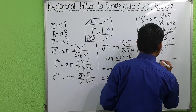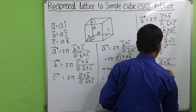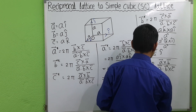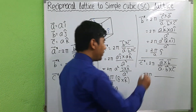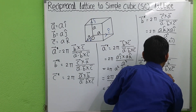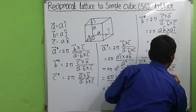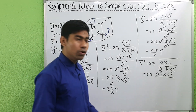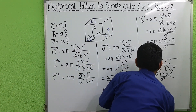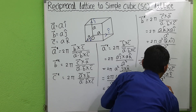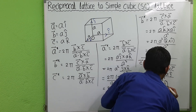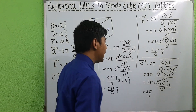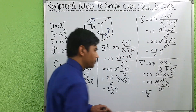Now we calculate c vector star. c* = 2π·(a×b) / (a·(b×c)) = 2π·[(a·i cap) × (a·j cap)] / a³ = 2π·a²·(i cap × j cap) / a³ = (2π/a)·(i cap × j cap). Since i cap × j cap = k cap, we get c vector star = (2π/a)·k cap.